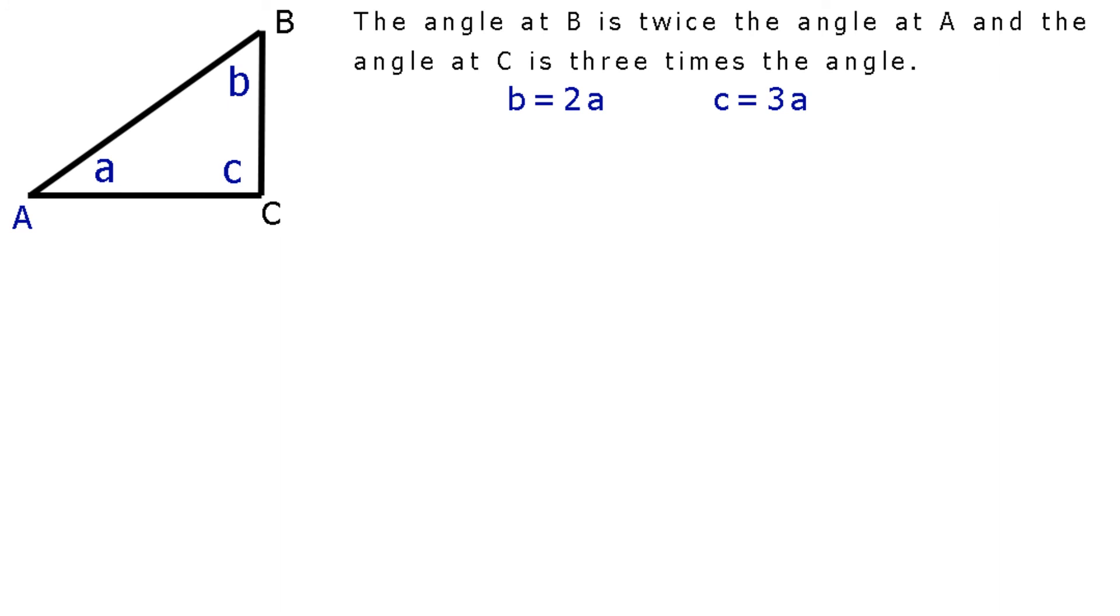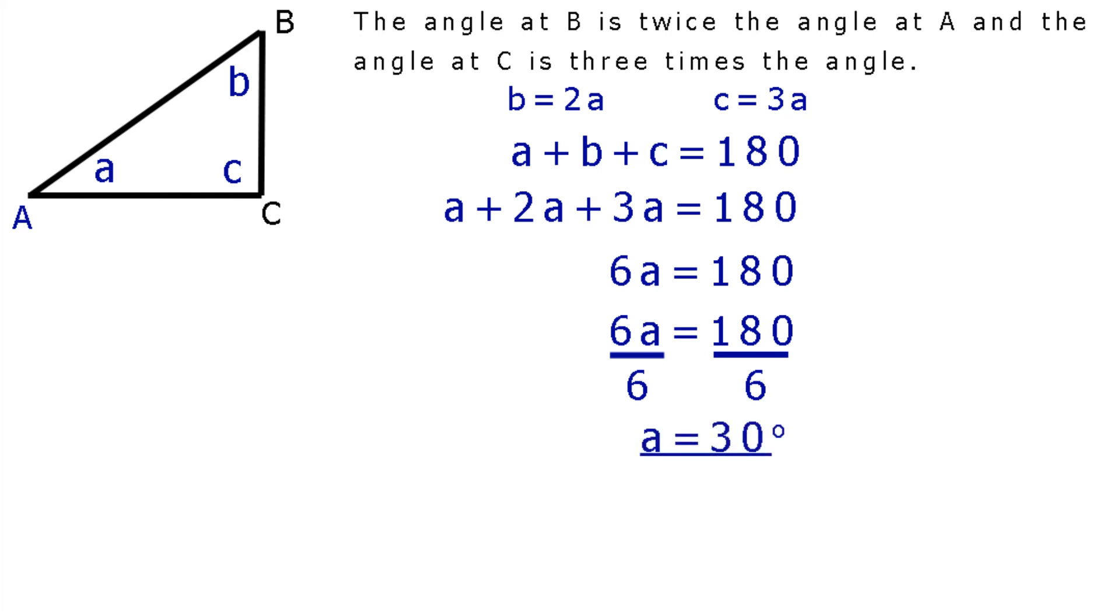Now, a plus b plus c equals 180 degrees. Substituting for b and c, a plus 2a plus 3a equals 180. Collecting the a terms, 6a equals 180, dividing both sides by 6 to isolate the a on the left hand side. 6a divided by 6 equals 180 divided by 6. So, a equals 30 degrees.